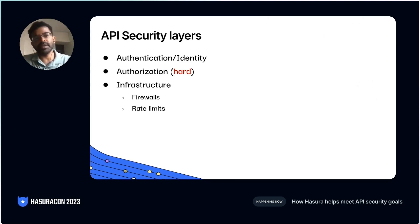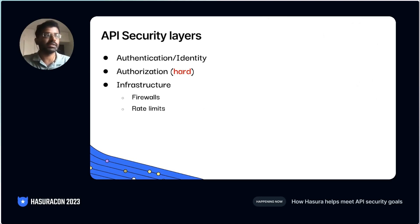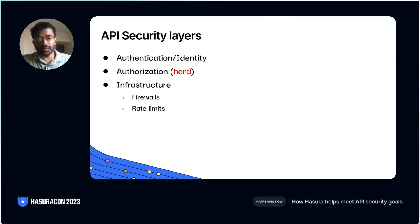And finally, there is the infrastructure components of it, like firewalls, rate limits, maybe something like password control, password rotation, those kinds of things. And today we'll be focusing on the middle part — the authorization layer.